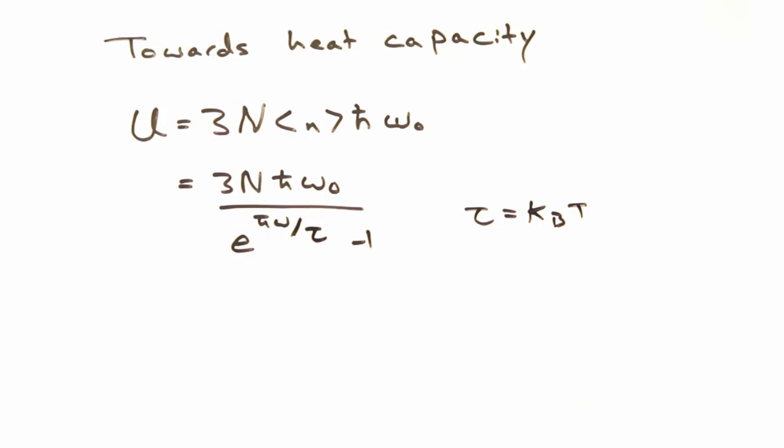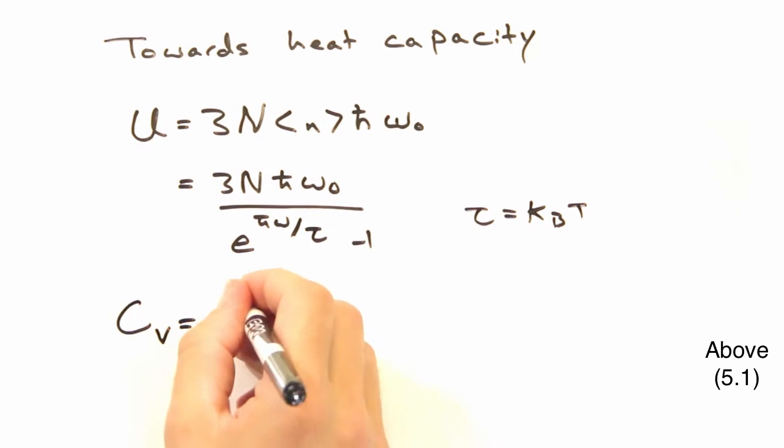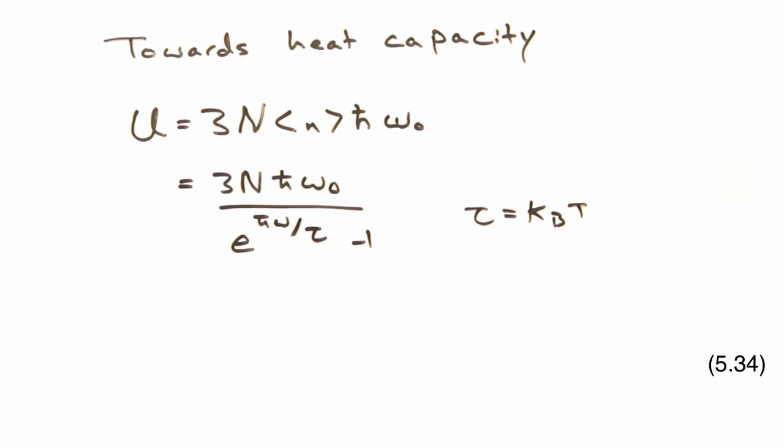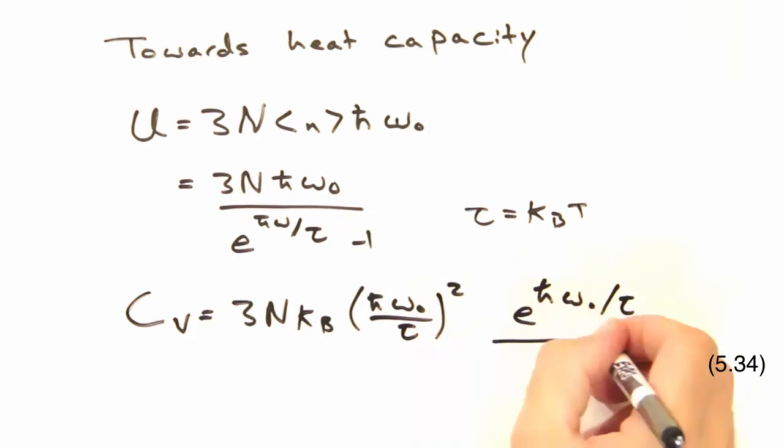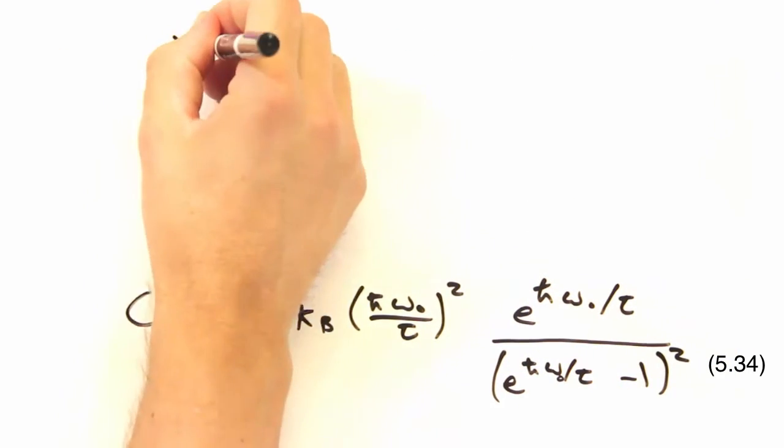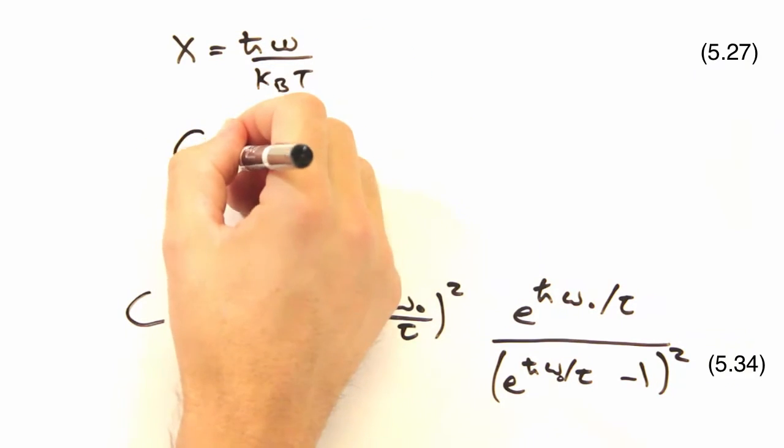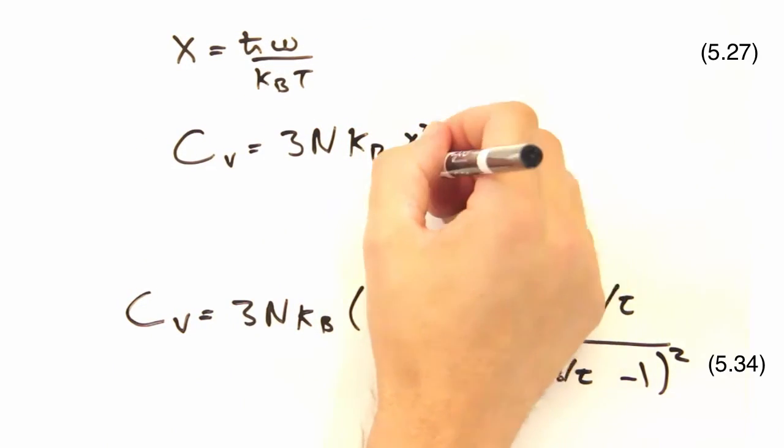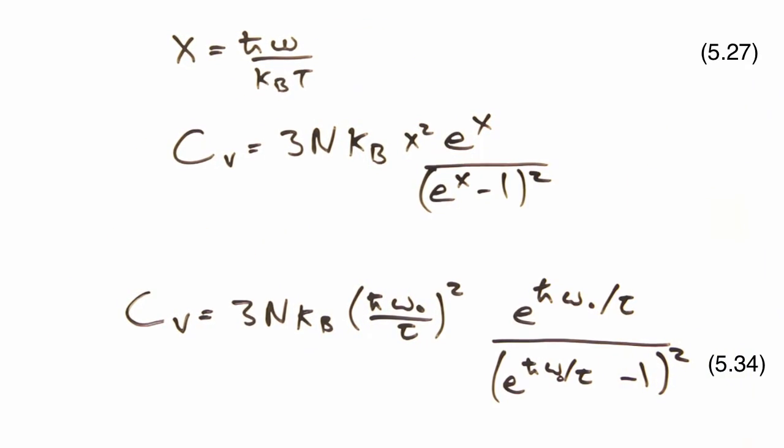Well that seemed awfully easy. Let's see how our heat capacity looks. All we have to do is take the derivative of u with respect to temperature, and we end up getting something of the following form. To make it look a little nicer, let's define this variable x that is inversely related to T, and rewrite our heat capacity as so.